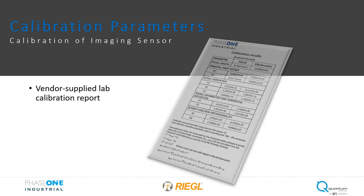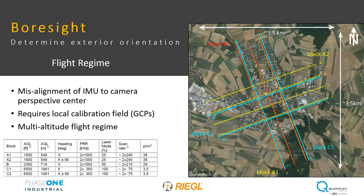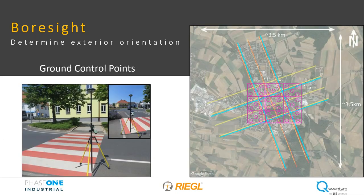Lab-derived calibration parameters are available from Phase One and are generally acceptable for lower-altitude solutions. However, it is also necessary to determine IMU misalignment angles following sensor installation for direct georeferencing accuracy, so in-air calibrations are performed to further refine values at altitude. Regal provides a refined calibration and boresight report for each camera installed, requiring a flight regime at varying altitudes in opposing directions over a calibration area with known ground control and checkpoints to evaluate the bundle block via RMS residuals. The control site is divided into nine quadrants with five GCPs identified and measured within each, with photos captured from three different perspectives for verification.